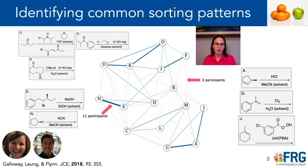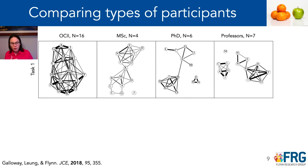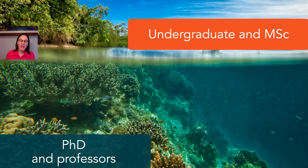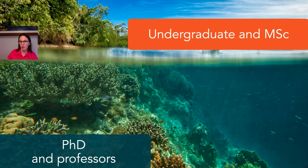Here are a couple of things we found when we looked across all participants. The organic chemistry 2 participants sorted these reactions in all different kinds of ways. As we moved towards more seniority, the PhD students and professors started to sort in more similar kinds of ways. As we got into task two with even more cards, the ways of sorting became even more disparate and diverse. The undergraduate and MSc students sorted differently from the PhD students and professors — specifically, the undergrads and MSc students sorted more at the surface level based on what they saw in the structures, versus the PhDs and professors who sorted more at deeper, process-oriented levels.